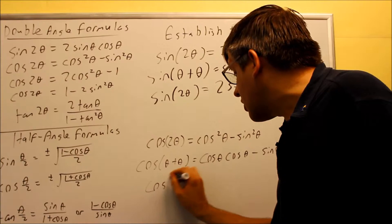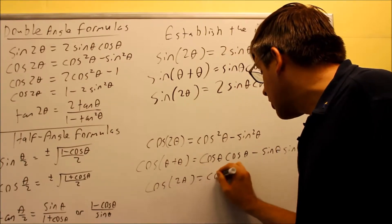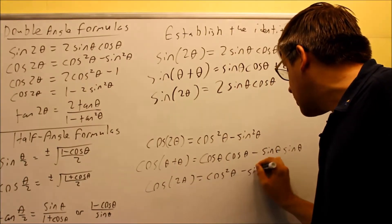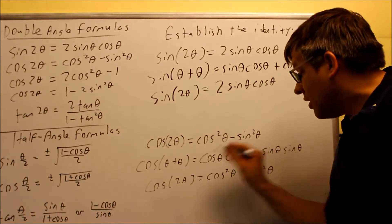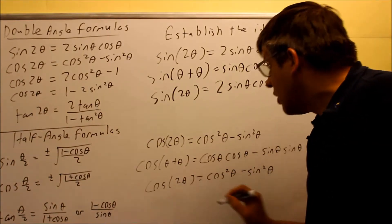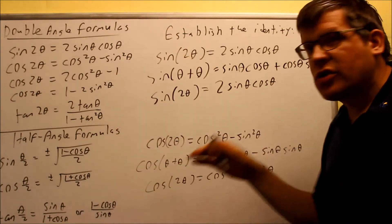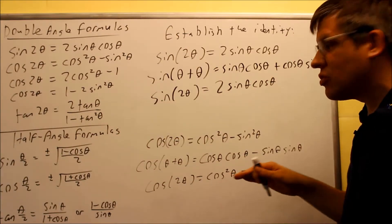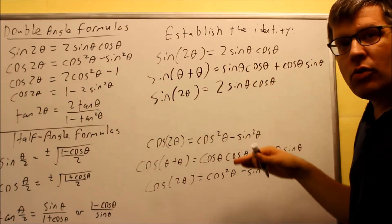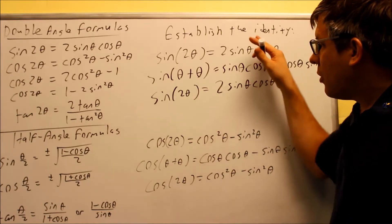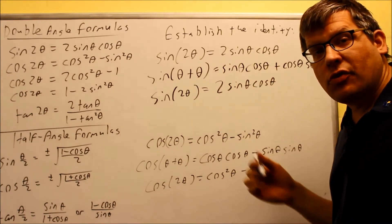When we simplify this, we get cos(2θ) equals cos²(θ) minus sin²(θ). So that's our other identity that's going to be complete here. So that's the idea. I'm not going to show you how the rest of them are derived. I just wanted to show you just the first two just so you can get an idea where they're coming from. But primarily, these are coming from your sum and difference formulas.